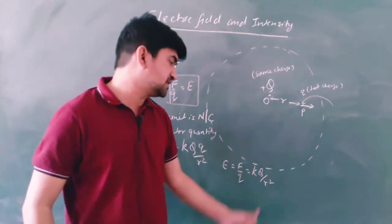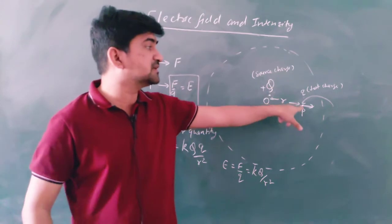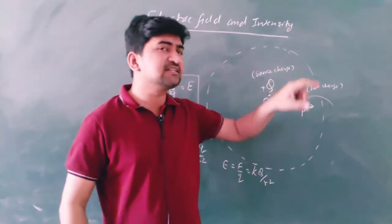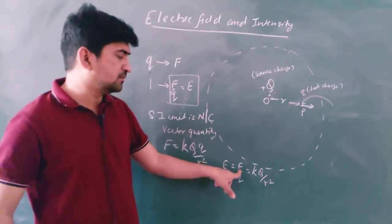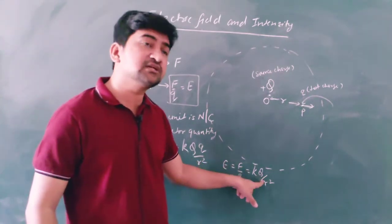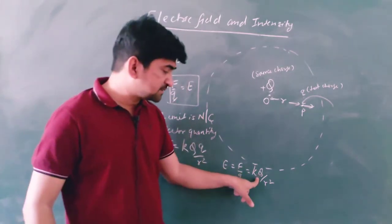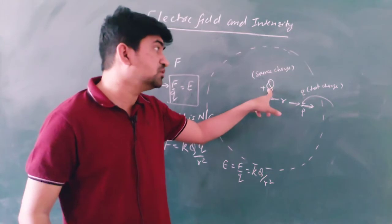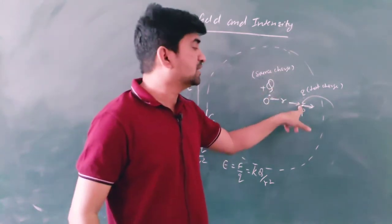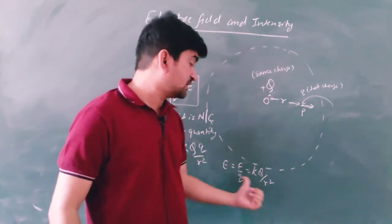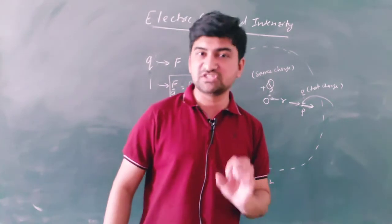From the formula E = KQ/R², you can see that the electric field depends on the source charge Q and the distance R from point P. It does not depend on the test charge. If you double the test charge, the force doubles, but F divided by Q remains the same — so the electric field intensity is independent of the test charge. The distance R appears as an inverse square relationship.